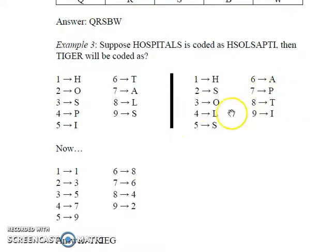After this, compare the position of letters in both these words. H is present at first place in both of them. However, O has been shifted from second to third place. S has been shifted from third to fifth place. P has been shifted from fourth to seventh place, and I has been shifted from fifth to ninth place.